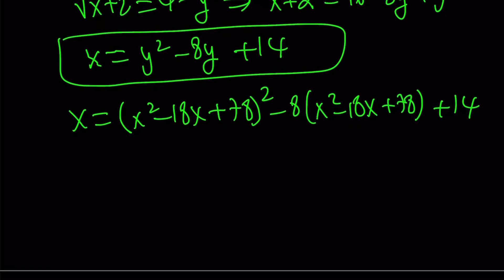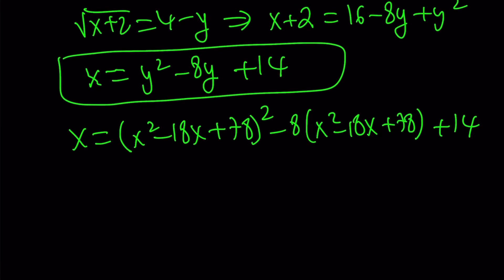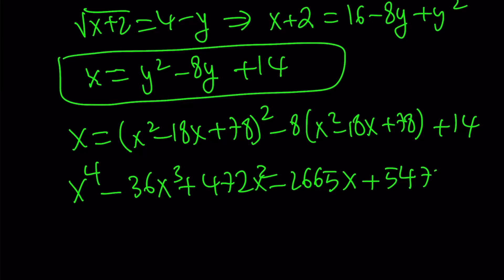But this is the equation you're getting from here. x to the fourth power minus 36x to the third plus 472x squared minus 2665x, oh man, plus 5474 equals 0. And guess what? This quartic equation has four real roots. Isn't that amazing? And here's the roots.